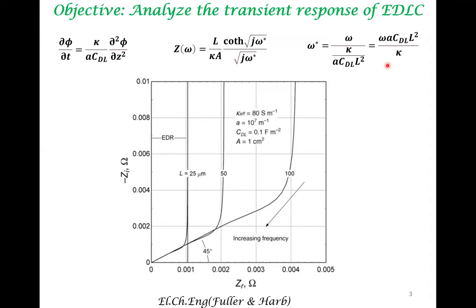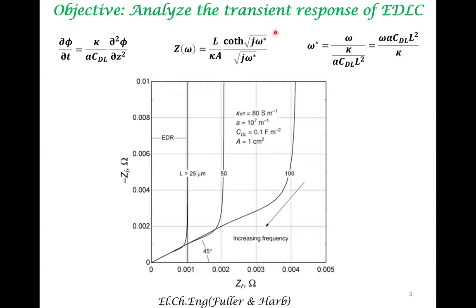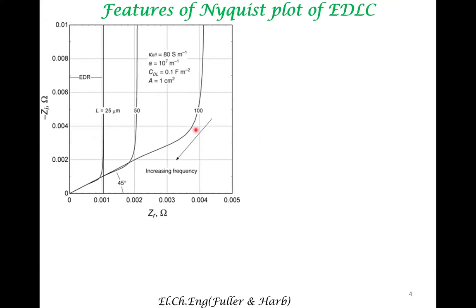Let us utilize these equations, plot them, and interpret them. This plot is called the Nyquist plot — the real part of impedance is along the x-axis and the imaginary part of impedance is along the y-axis. We are plotting curves for three different EDLC electrodes of three different thicknesses: 25 microns, 50 microns, and 100 microns. The parameters include the conductivity in the electrolyte within the porous electrode, area per unit volume, double layer capacitance, and cross-sectional area. Once all these are known, we plot the curves for three different thicknesses.